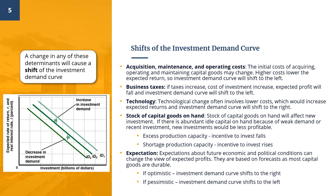As mentioned before, the main determinants of investment spending are the expected rate of return and the real interest rate. Any changes in those rates will cause a movement along the investment demand curve. However, when other things change, the investment demand curve will shift. Generally, any factor that leads businesses to expect greater rates of return on their investments will increase investment demand. An increase in investment demand will shift the curve to the right, while a decrease will shift it to the left.